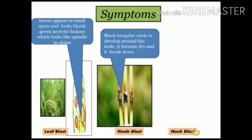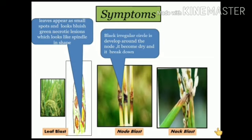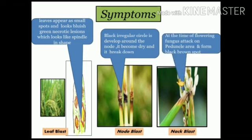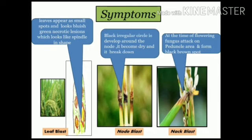Third is neck blast, which is the most harmful phase of this disease. It occurs at the time of flowering. The fungus attacks the peduncle area and forms a black-brown spot. At the time of flowering, fungi attack and form a black color area. This occurs at the uppermost node of the paddy plant. So the three types of blast are: leaf blast, node blast, and neck blast.